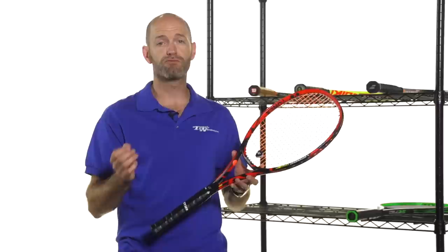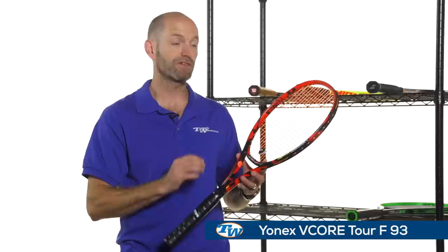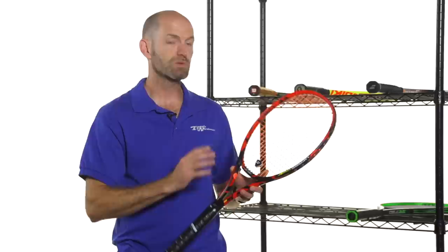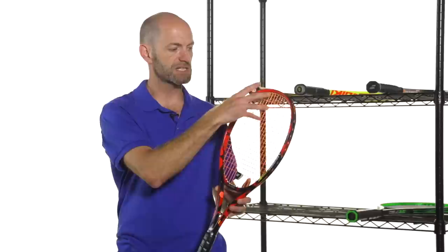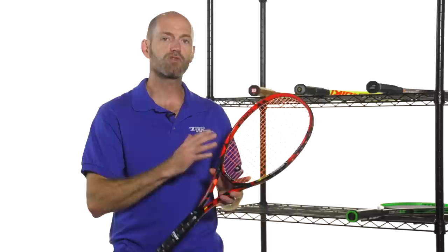Next up, I have a Yonex racket, and Yonex have made some really cool, really nice playing mids in the past, and I think this Vcore Tour F93 fits right in there. The isometric head shape you get on a Yonex always makes their mids play, I think, more like a 95 than a 93. It really does have a very generous sweet spot in it. This one has a really interesting string pattern too. It's very dense like the Babolat we looked at, but this one is a 16-21, so 16 mains, 21 crosses. It's a very unique string pattern. It works exceptionally well in this racket.